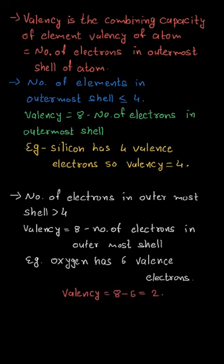This is how we can calculate valency of any element. In this case, we concluded that valency of silicon is four and that of oxygen is two. Thank you.